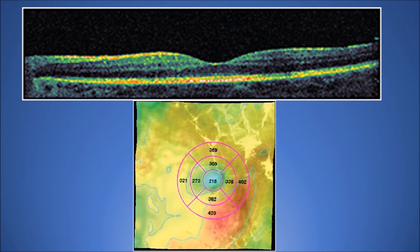This OCT is for the same patient after receiving four intravitreal injections of bevacizumab. As seen in the upper image, macular thickness is reduced. The second image shows a reduced central macular thickness with residual extrafoveal thickening, which requires focal laser treatment.